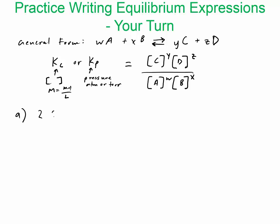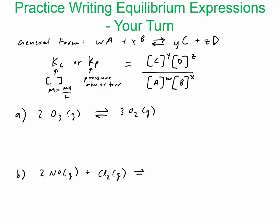Try these two examples: first, 2O₃ ⇌ 3O₂ — write the equilibrium expression for that. Second, 2NO + Cl₂ ⇌ products — write the equilibrium expression for that one as well. I'll see what you come up with. That's the end of our tutorial.